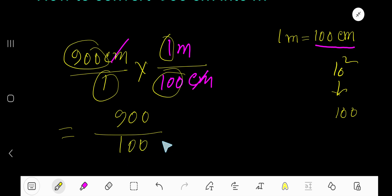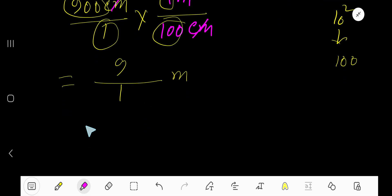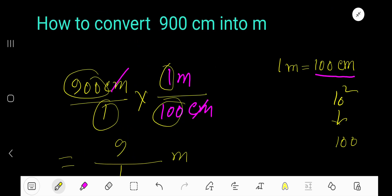Meter. Now cancel the zero with the zero, the zero, the zero. So we have nine over one. Nine over one means what? Nine meters. Our answer is nine meters.